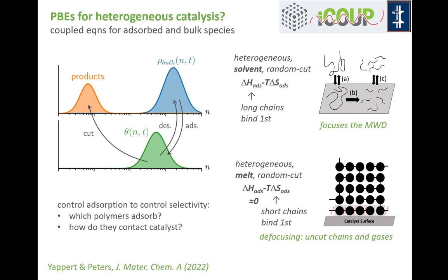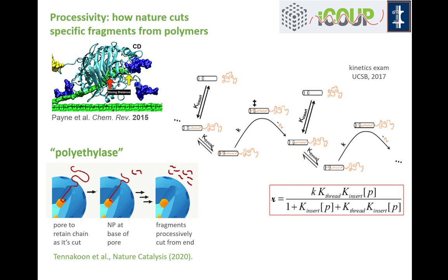Indeed, many early reports where people took ruthenium nanoparticles and platinum nanoparticles and put them exposed on off-the-shelf supports — this is exactly what was happening. They were making a lot of methane in early stages and the polymer was still largely intact.